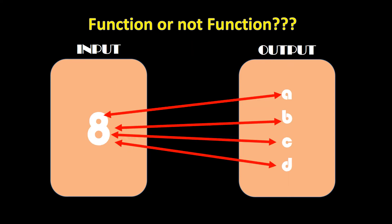The next example has only one element in the input, which is 8, and it is paired to all of your outputs. This means it is not a function. Because although the element of your domain is connected with lines, the problem is it's not only one — it has more than one. There are four lines connected to your input, so that makes it not a function.